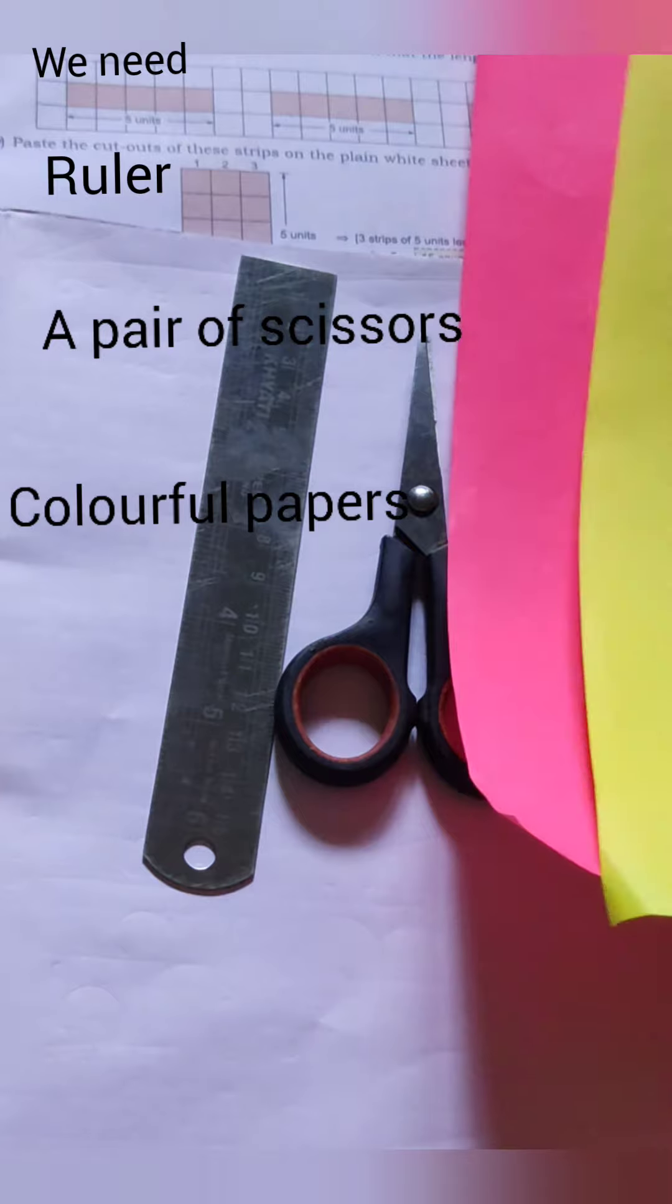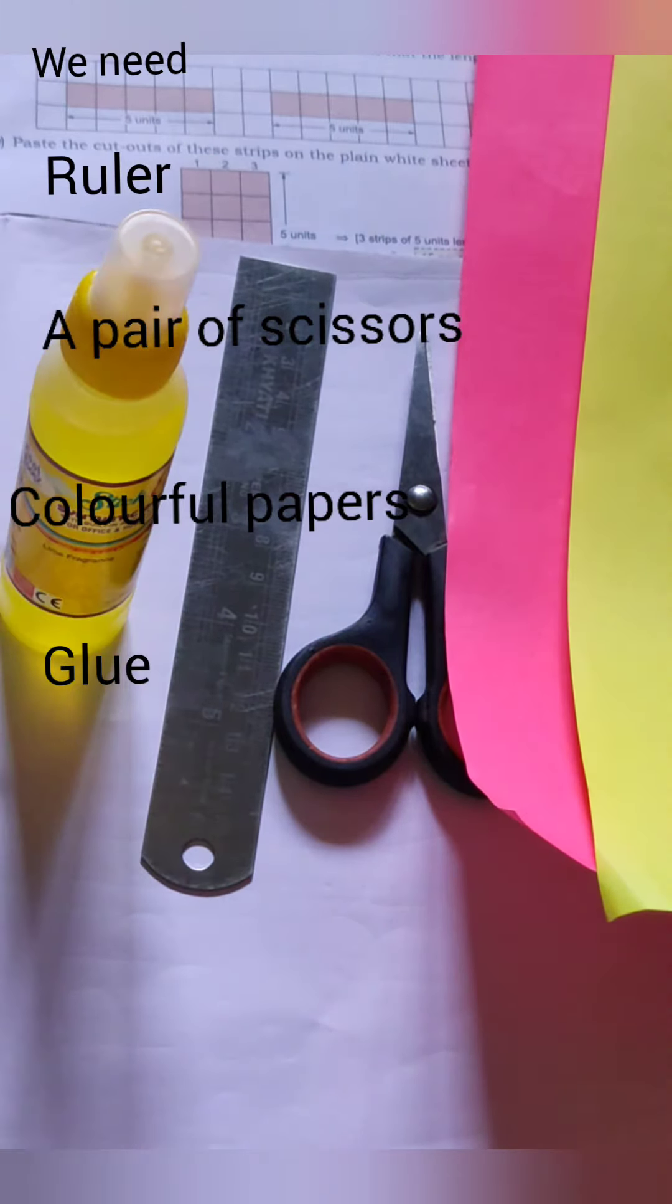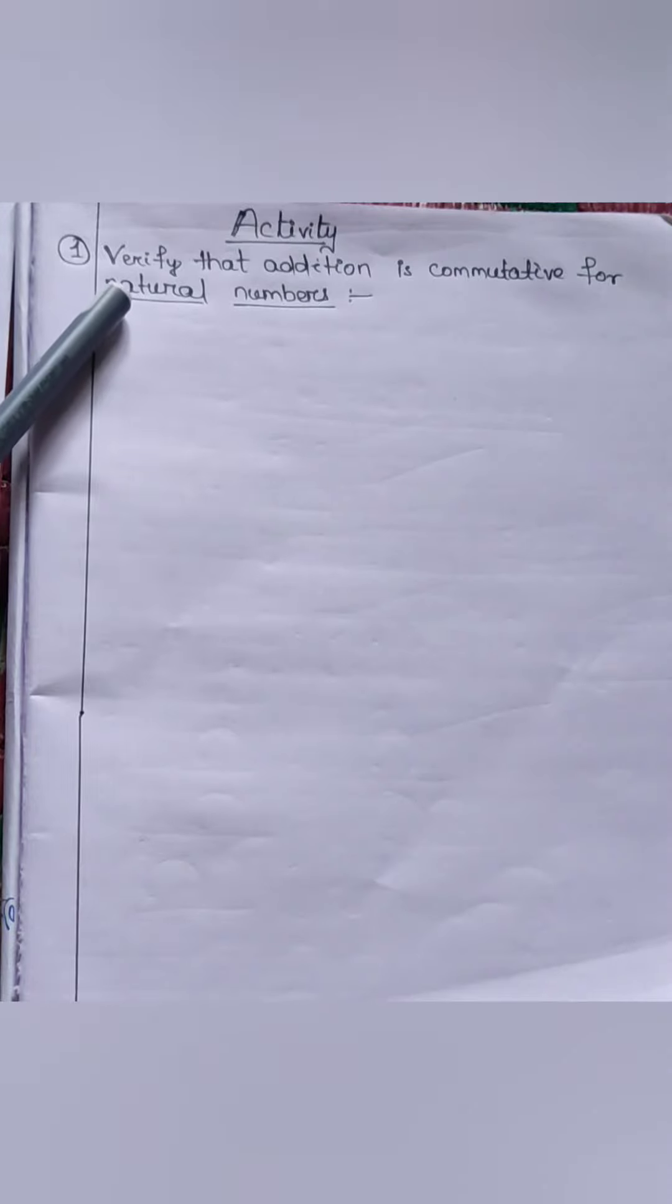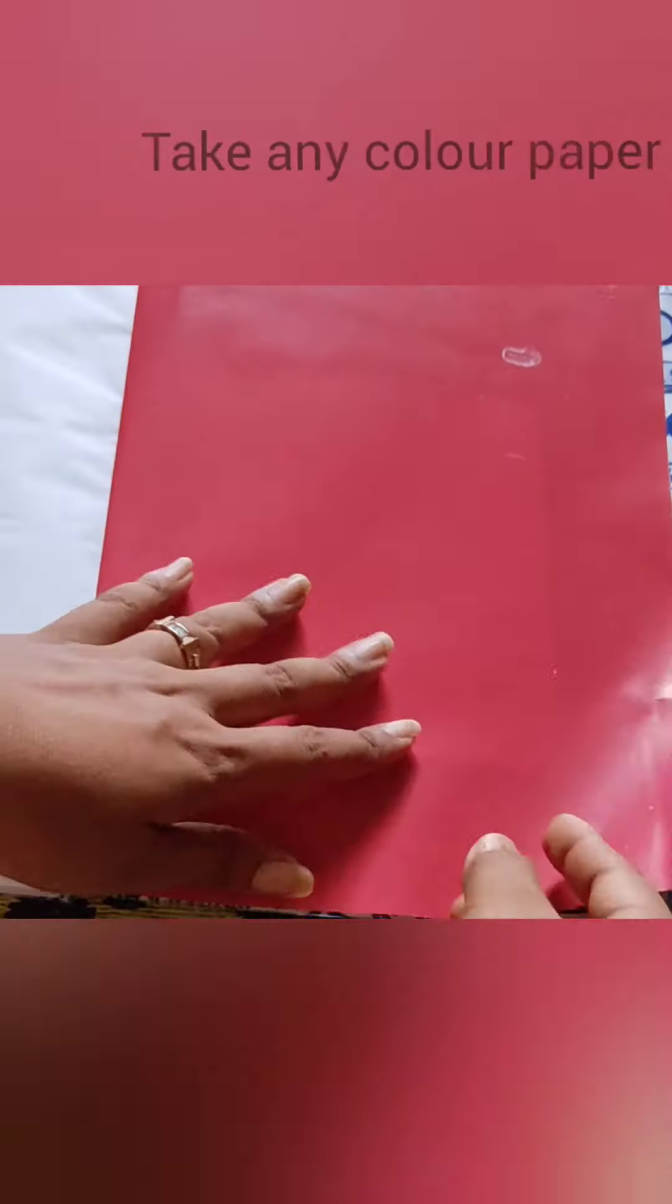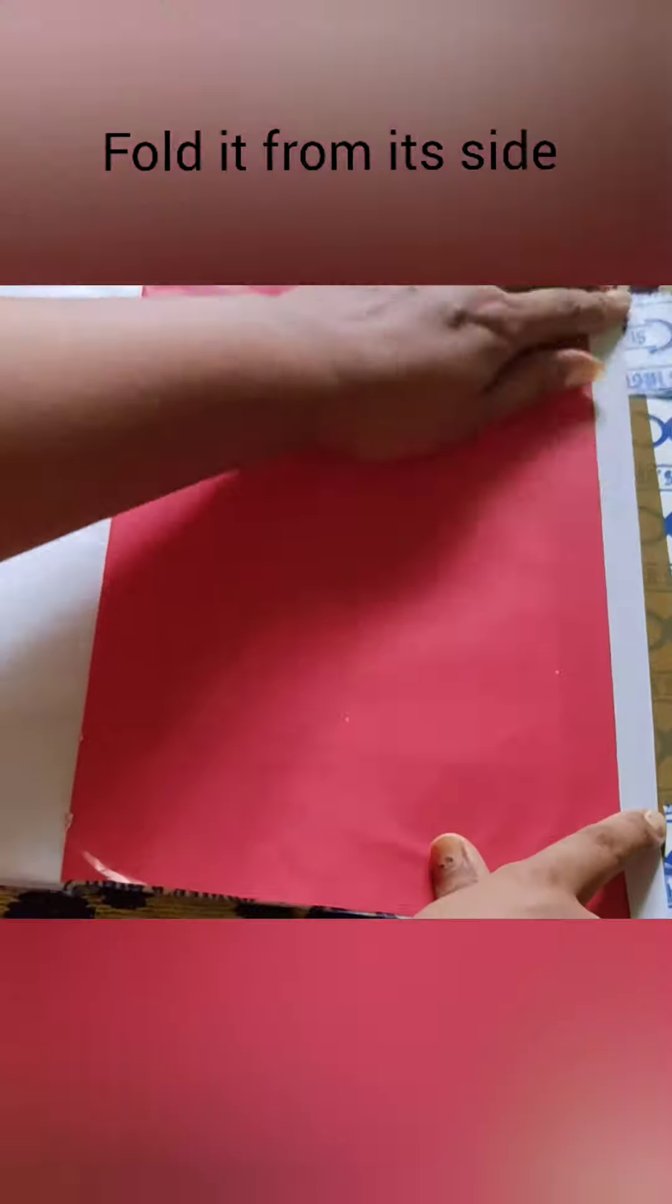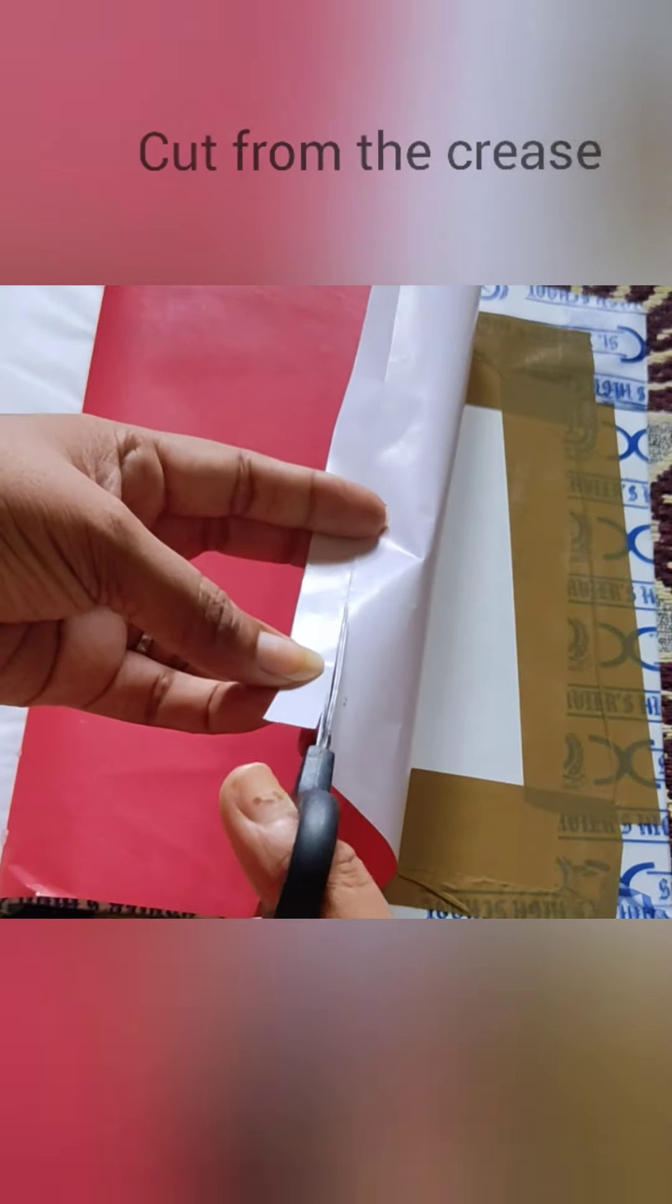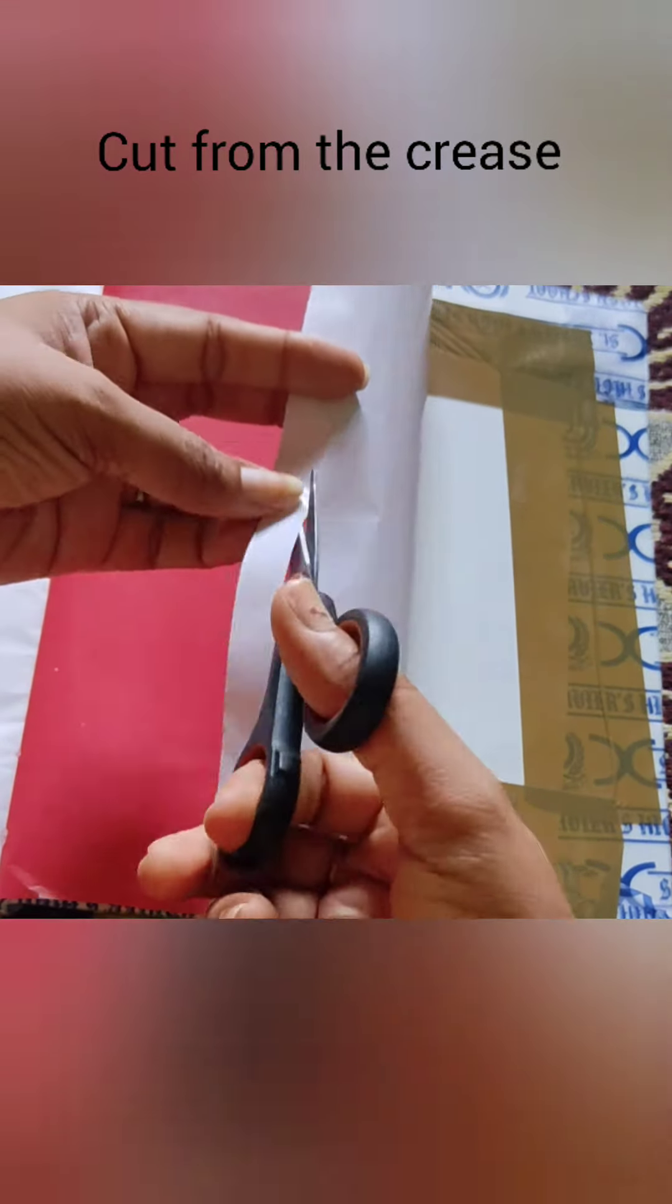So let's get started. In your project copy, just keep the heading: verify that addition is commutative for natural numbers as well as whole numbers. Now take any color paper. Here, on the back side of your activity book, one color paper is there, so I am using that one. Fold it the way it has been given. Now cut it from the crease.